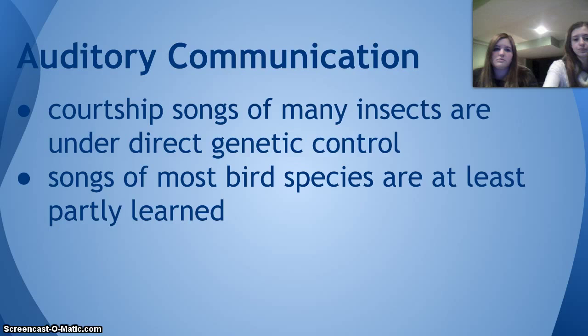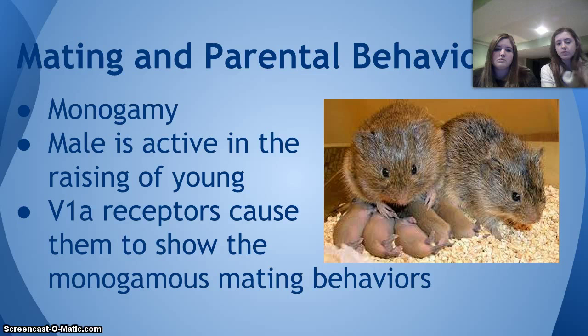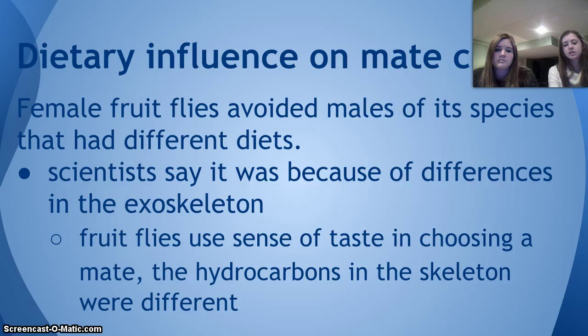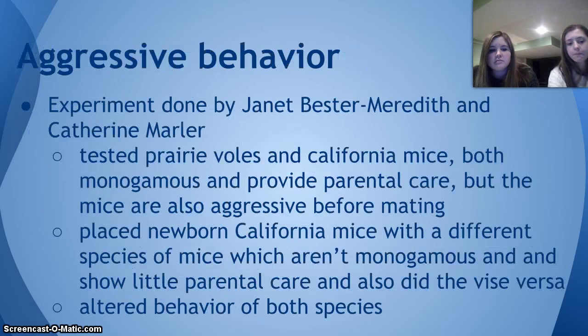There are different mating and parental behaviors. For example, voles are monogamous and the male is active in raising the young, which is rare in mammals. The V1A receptors cause them to show monogamous mating behaviors. There can also be dietary influence on mate choice — some female fruit flies avoid males of the species that have different diets. Fruit flies use sense of taste in choosing a mate, and if the hydrocarbons are different from what they prefer, they don't mate with that fly.